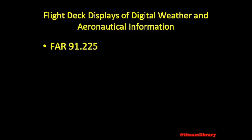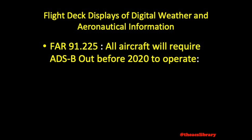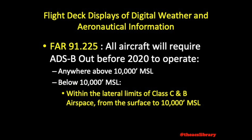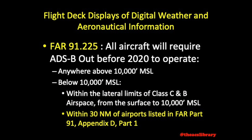According to FAR 91-225, all aircraft will require at least an ADS-B out transmitter before 2020 to operate anywhere above 10,000 feet MSL, and below 10,000 feet anywhere within the lateral limits of Class Charlie and Bravo airspace from the surface to 10,000 feet MSL — pretty similar to a transponder. Additionally, ADS-B will be required anywhere within 30 nautical miles of the airports listed in FAR Part 91 Appendix Delta Part 1, which includes some military airfields and Class Bravo airports.